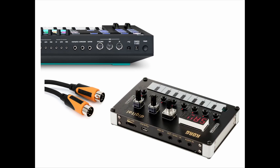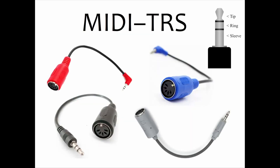Another example is the Korg NTS-1, a nice small synthesizer — really fun. You also don't see a five-pin DIN connector anywhere on it. Again, what you do see is a small headphone-jack-looking port. You're obviously not going to be able to use a five-pin DIN cable to talk to the NTS-1. Fortunately, there exist adapters that will convert from those small headphone-jack-looking ports out to a five-pin DIN connection.